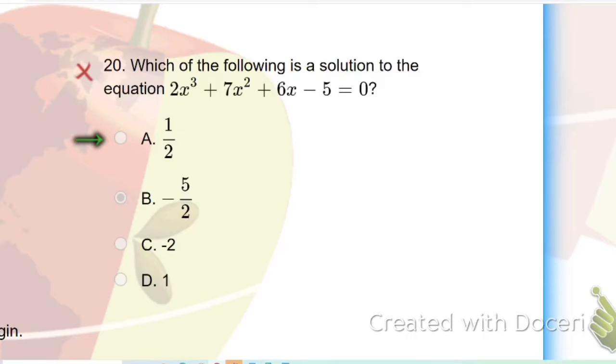Number 20, which of the following is the solution to the equation 2x³ + 7x² + 6x - 5 = 0?